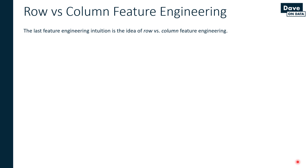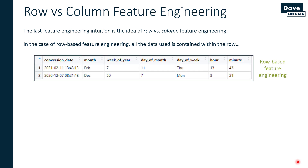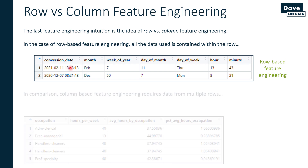The last feature engineering intuition we need is this idea of row versus column feature engineering. In the case of row-based feature engineering, all the data used to engineer the new features is contained within the row itself. What we saw on the last slide is an example of row-based feature engineering — all of those new features that were engineered came from the single row; all the data needed was within the observation itself.